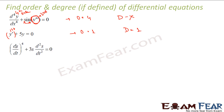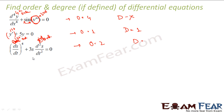Another example: ds/dt — order is 1. Next example has a second order term and a first order term. The highest is second order, so order is 2. For degree, check for cosine or trigonometric or exponential functions — it does not have any. So degree is defined. The highest power of the second order term is 1, so degree is 1.